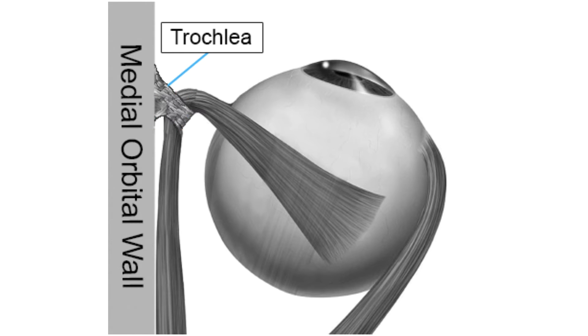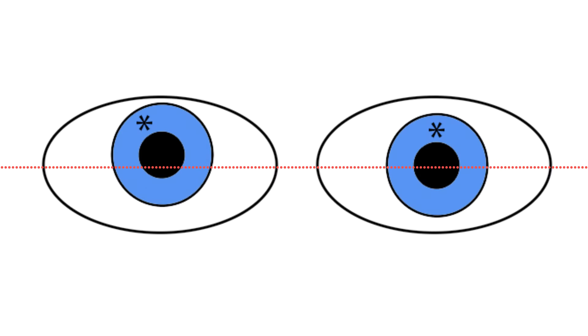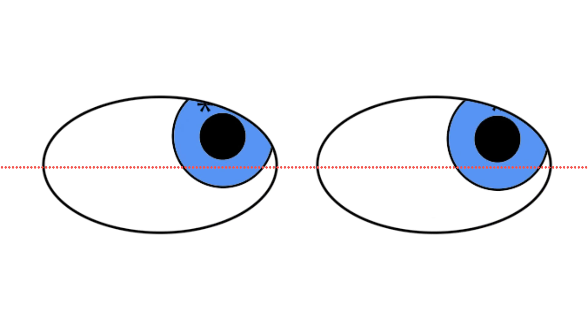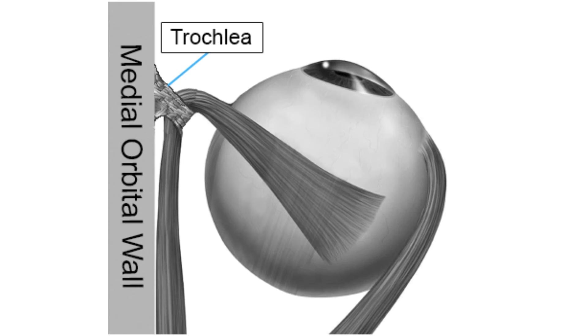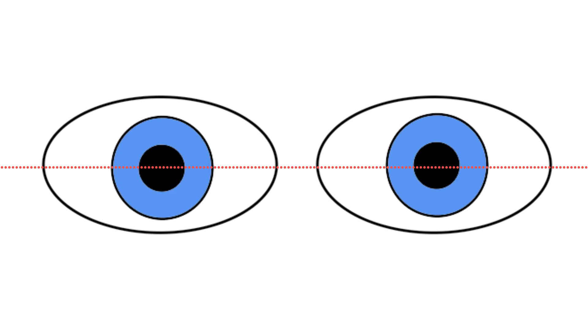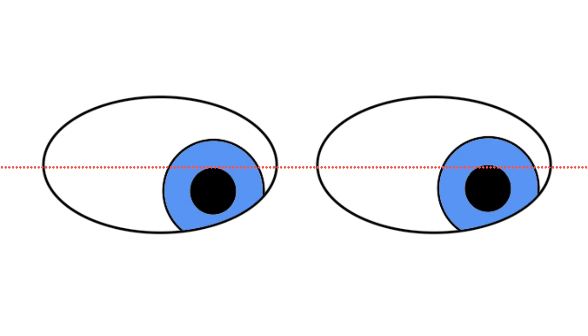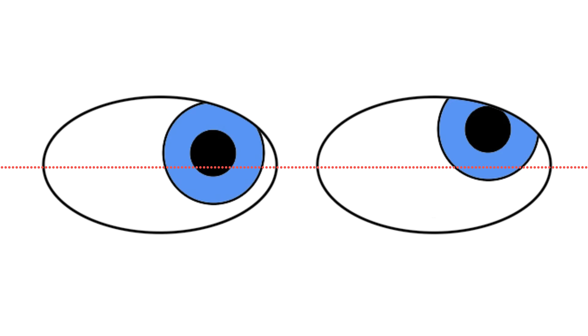Superior oblique muscle dysfunction can also result from trauma to the orbit, including surgery, especially if it involves the trochlea. In that case, the hypertropia is greater in down gaze than it is in up gaze. Congenital or acquired inflammation of the tendon sheath may prevent the tendon from sliding through the trochlea. As a result, the eyes can move downward and inward normally, but the affected eye cannot move inward and upward. Such a condition is called Brown's tendon sheath syndrome.